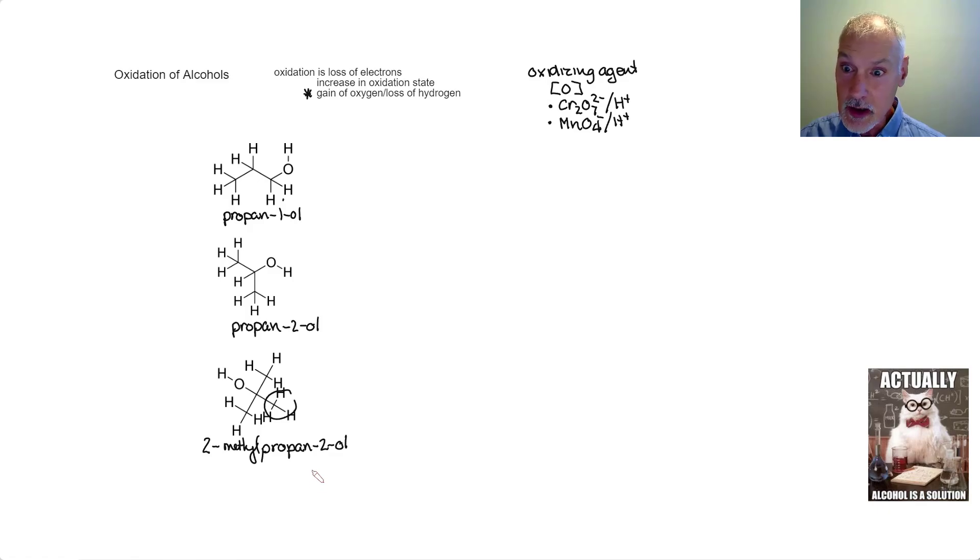When we oxidize alcohols, the products are determined by the type of alcohol that's present. In our first molecule, I can see that the OH, which is attached to this carbon, that this carbon itself is attached to but one other carbon. That makes this what we call a primary alcohol. Here, the hydroxide group and the carbon to which it's attached—that carbon is itself attached to two other carbons. That makes it a secondary alcohol.